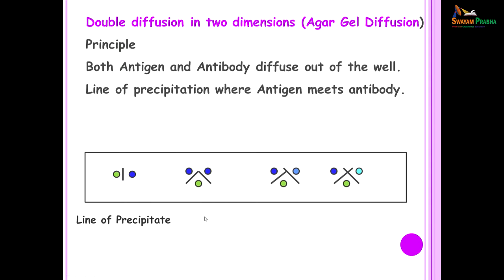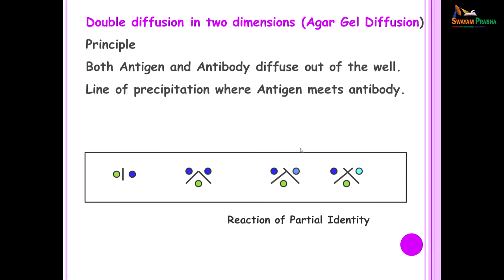This particular test can be used to identify different antigens. When we take an antibody and add two different antigens, if the two lines meet we call it a reaction of identity — indicating that the antigens are the same. If the lines do not form an arch but one has extended a little beyond the other, we call it a reaction of partial identity. If the lines have crossed each other, we call it a reaction of non-identity — meaning the antigens are completely different.